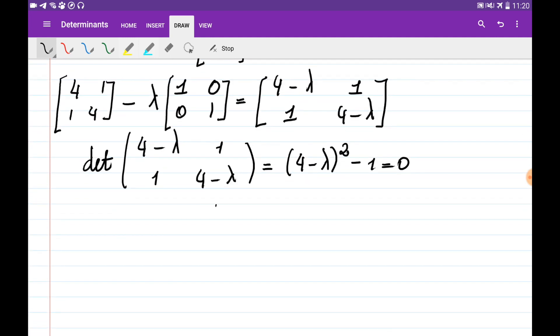If you open the brackets and simplify everything, we obtain lambda squared minus 8 lambda plus 15 equals zero.